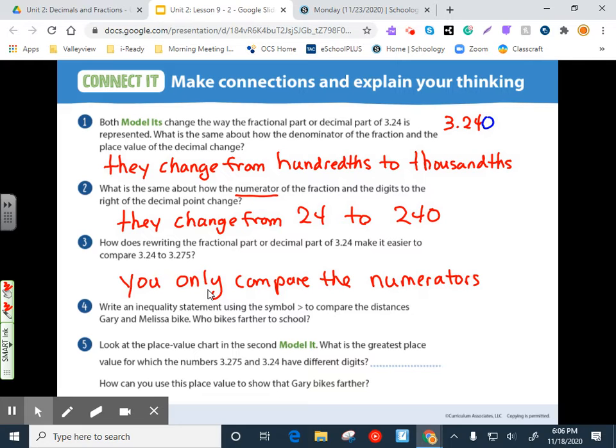How does rewriting the fractional part or decimal part of three and twenty four hundredths make it easier to compare three and twenty four hundredths to three and two hundred seventy five thousandths? You only compare the numerators, which, again, are the top numbers of a fraction. Write an inequality statement using the symbol greater than to compare the distance Gary and Melissa bike. Well, we know Gary. The distance is greater than Melissa's distance.